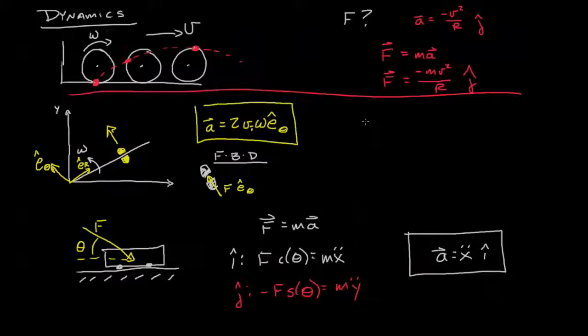We can make a relationship between force and acceleration. The force equals mass times acceleration, and in this case our force is F e_theta equals mass times 2vt omega e_theta.